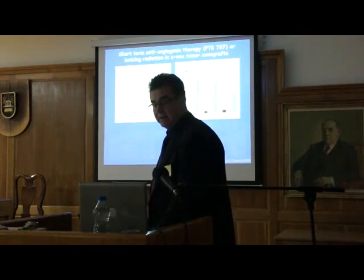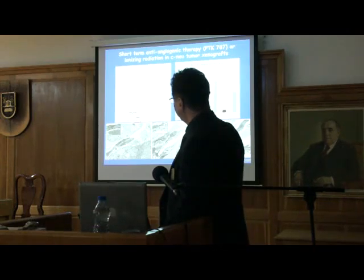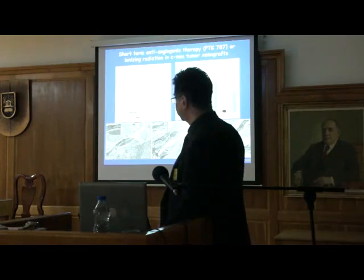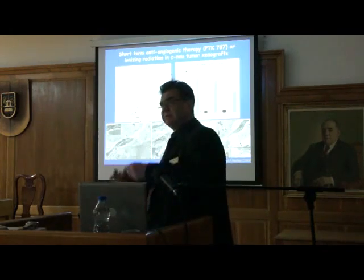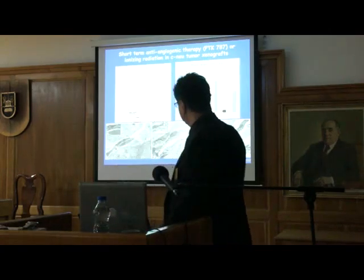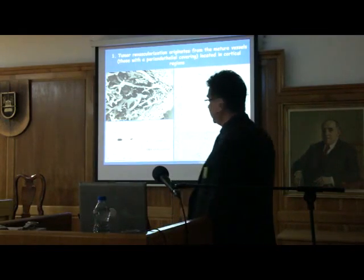There are the morphological data and the curves. What is interesting is that if you irradiate and apply anti-angiogenic treatment — and when people show pre-clinical studies, they show only the first two to three weeks — but after that, what happens? There is a relapse. The treated tumors start to grow very rapidly. Why is that?